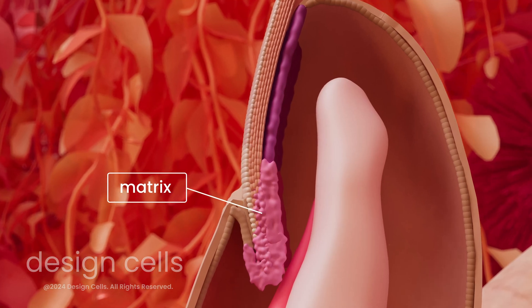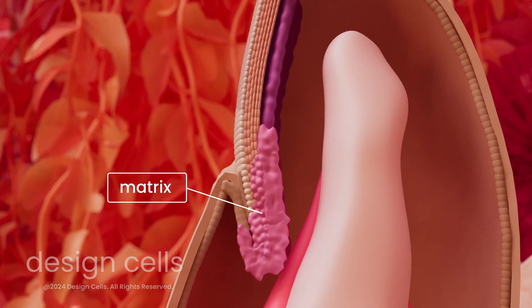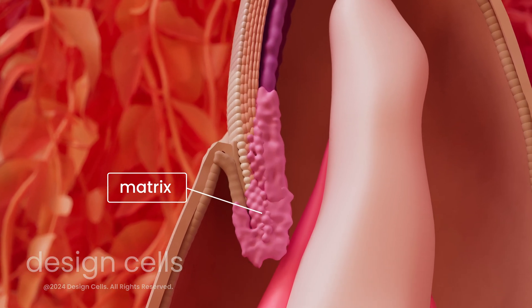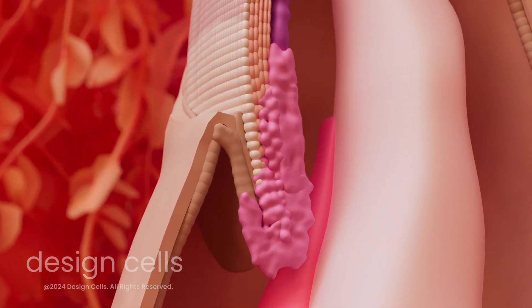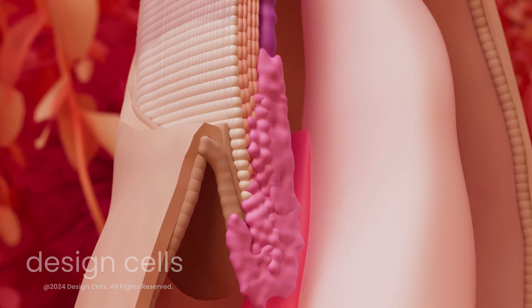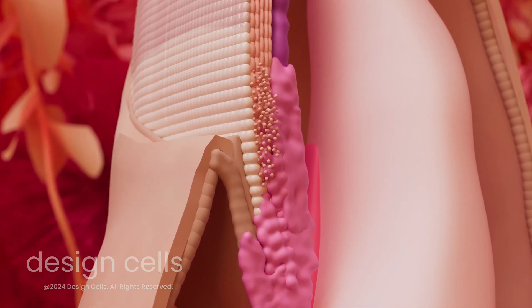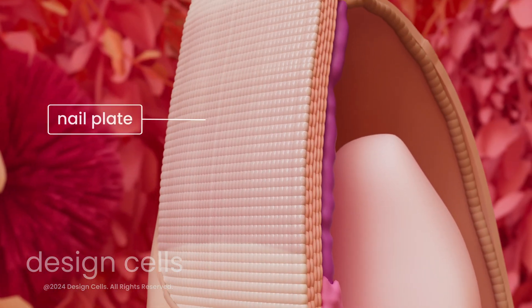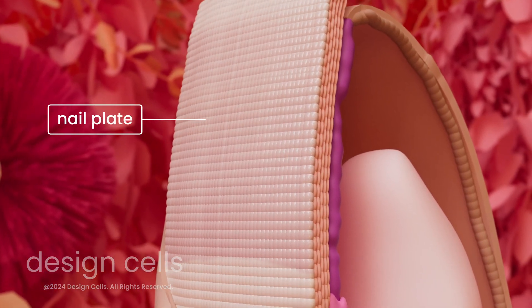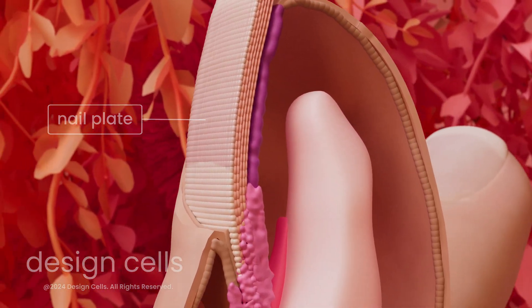The matrix, located at the base of the nail, is responsible for producing the cells that will constitute the nail. As they are formed, these cells gradually move forward. During this process, they undergo keratinization and progressive hardening, filling with keratin and losing their nucleus. The keratinized cells contribute to forming the nail plate, the visible part that emerges from the finger or toe.